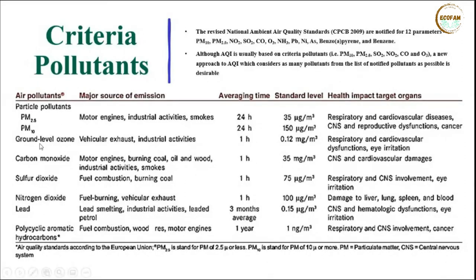Lead comes mainly from smelting industries, industrial activities, and leaded petrol — specifically tetraethyl lead used in two-stroke engines to improve combustion efficiency. Lead concentration is calculated on a three-month average basis and should not exceed 0.15 micrograms per cubic meter. It causes hemoglobin dysfunction, eye irritation, and central nervous system damage — as most criteria pollutants directly impact the central nervous system.